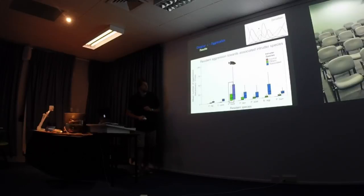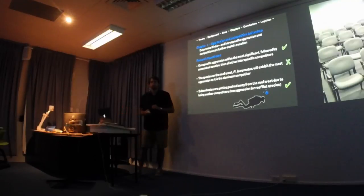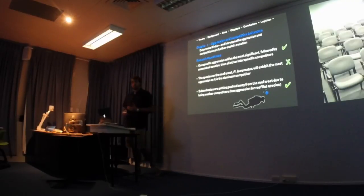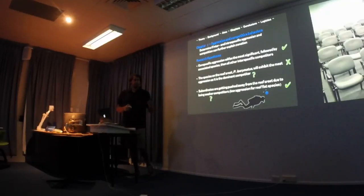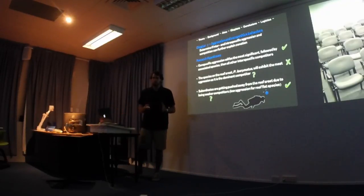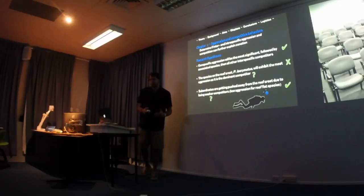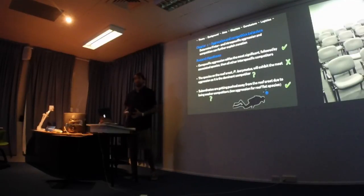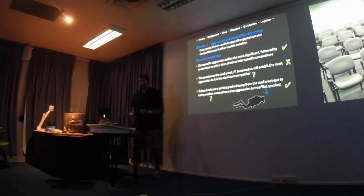So my first hypothesis was partly supported — Lacrymatis was not the most aggressive; it was Bancinensis. And there was low aggression in the reef flat species. However, this shows relative aggression rather than absolute competitive dominance, so I'll go back and look at win-loss ratios of observed interactions between species to flesh that out more.